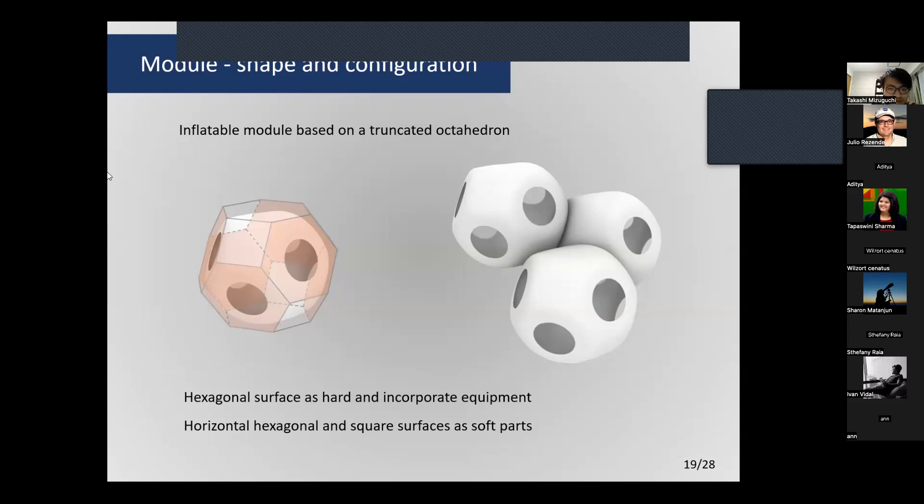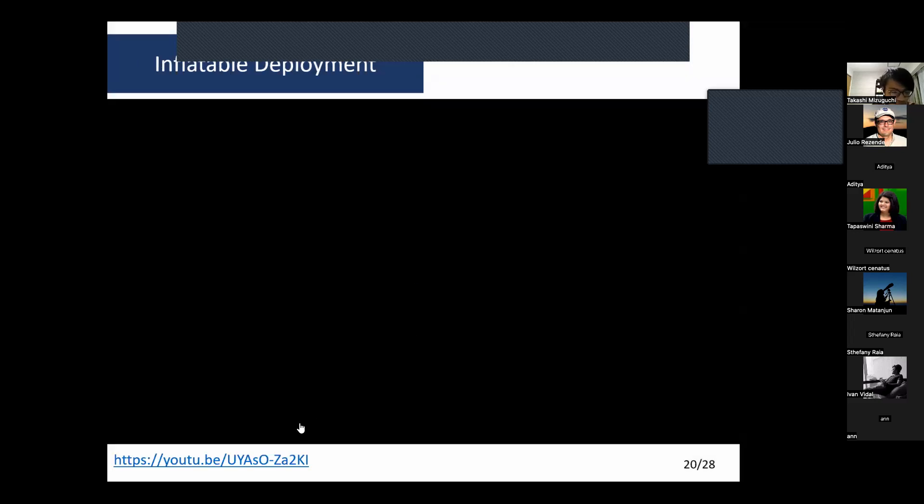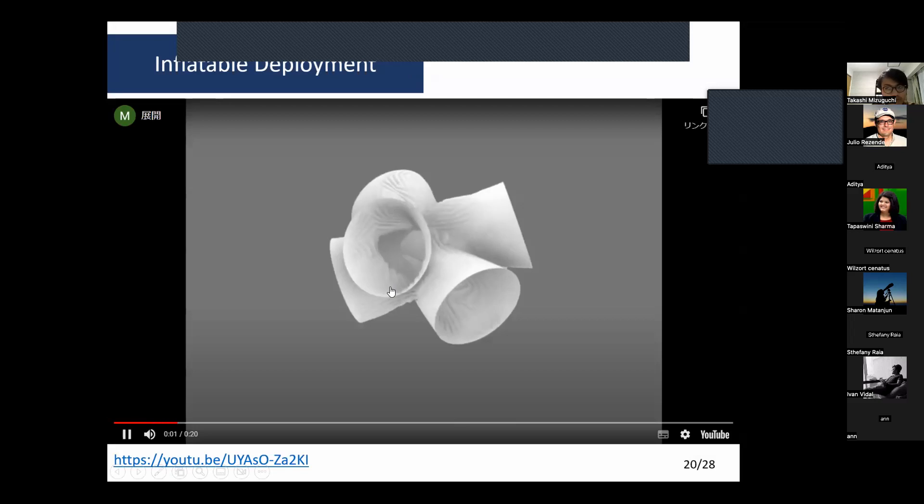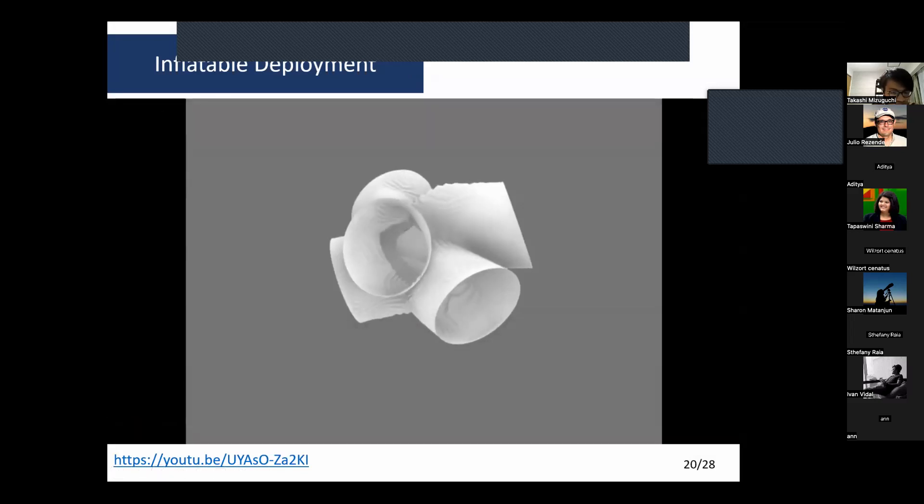Based on these conditions, I will discuss the design and construction method. The inflatable module is based on a truncated octahedron. Hexagonal surfaces are hard and incorporate equipment and are horizontal, while square surfaces are soft parts. This is how to inflate the module joints in simulation.